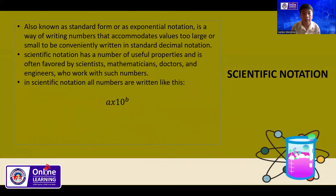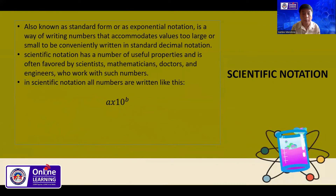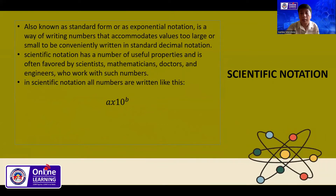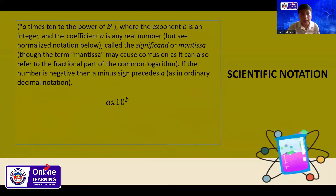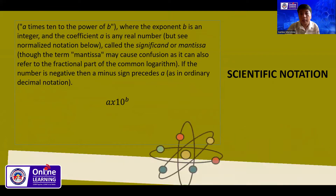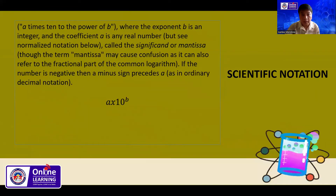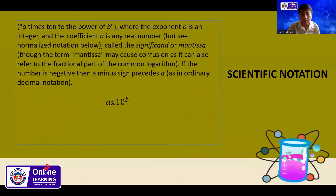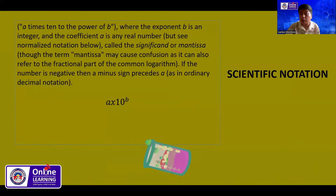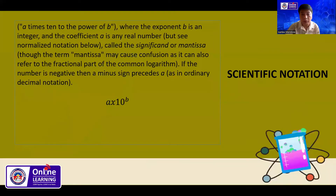In scientific notation, all numbers are written as a × 10^b, where the exponent b is an integer and the coefficient a is any real number, called the significand or mantissa — though the term mantissa may cause confusion, as it can also refer to the fractional part of the common logarithm.